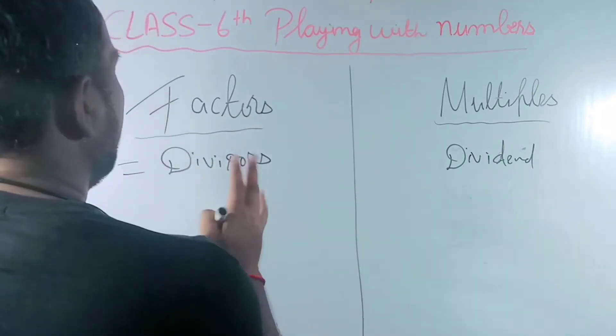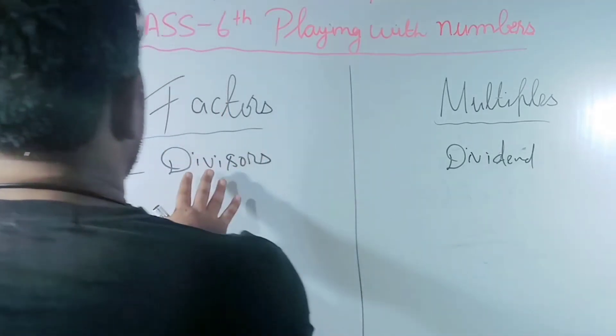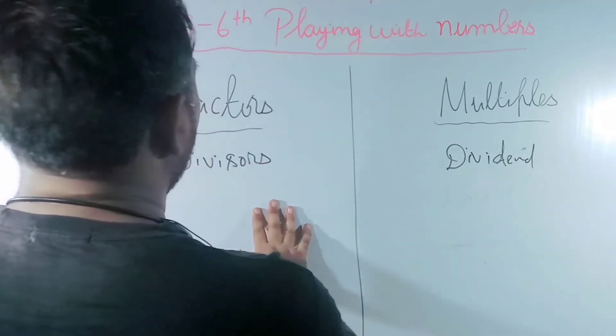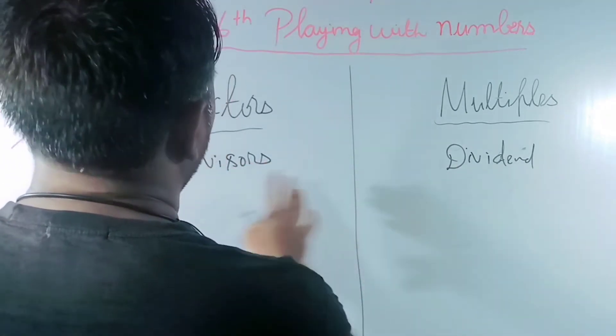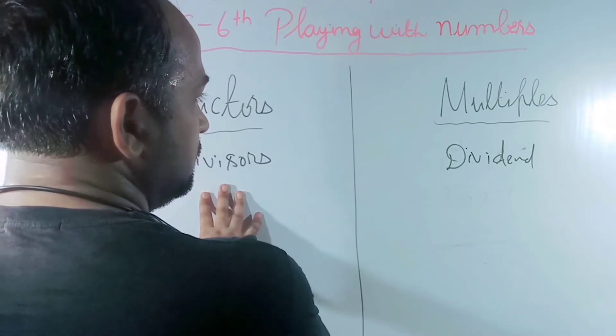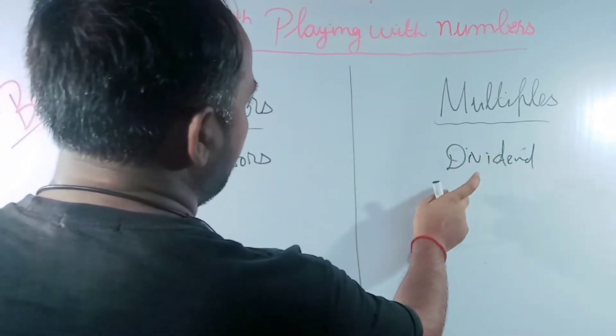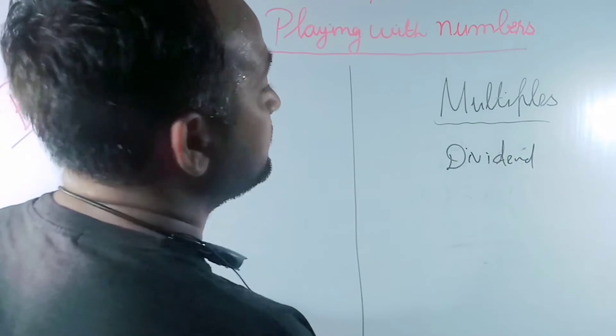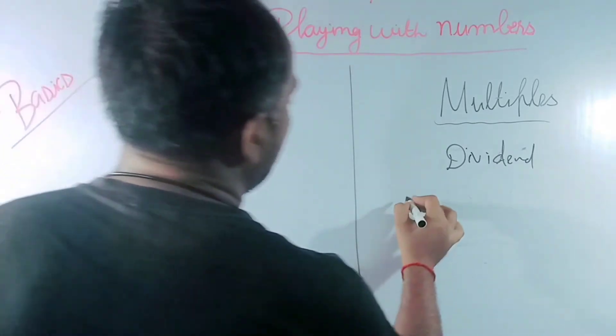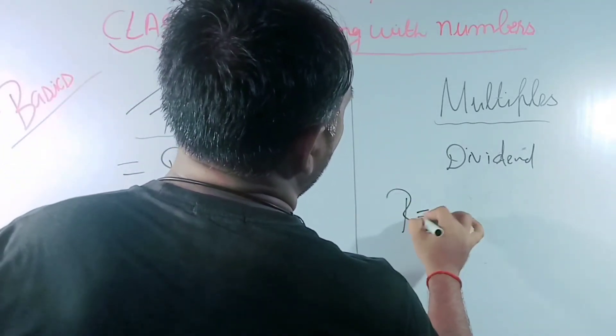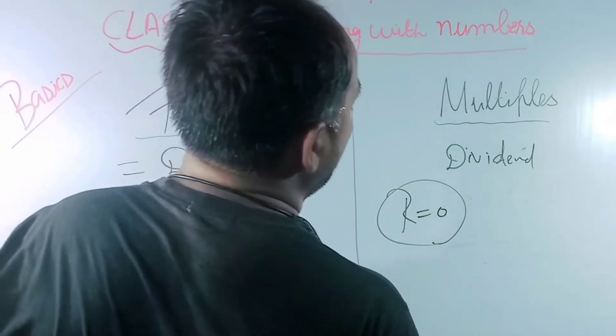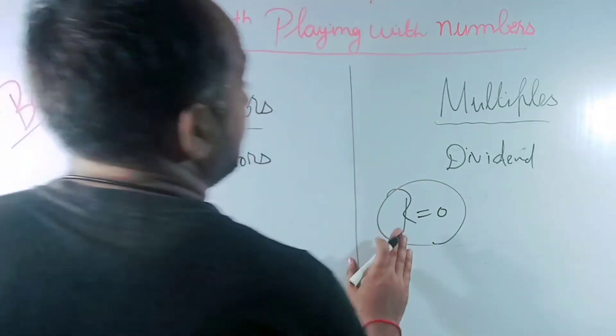But one condition is here: whenever we divide dividend by divisor, this number must be divided completely. It means there is no remainder. Remainder must be zero all the time.